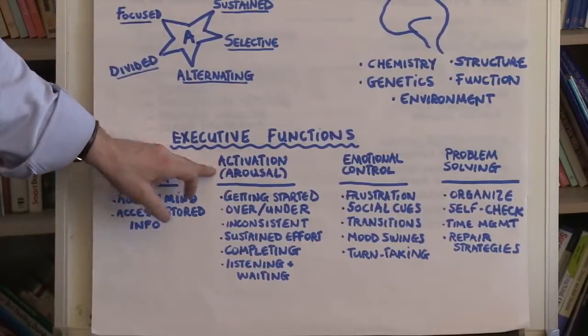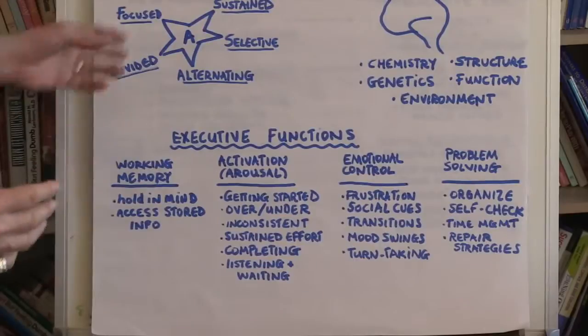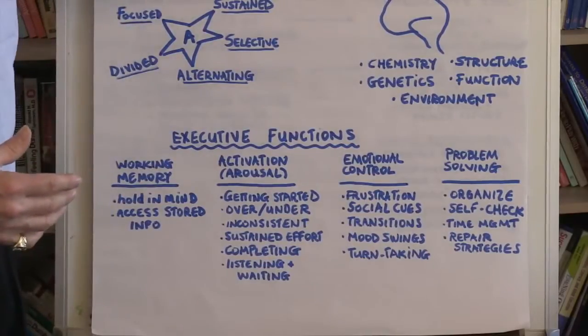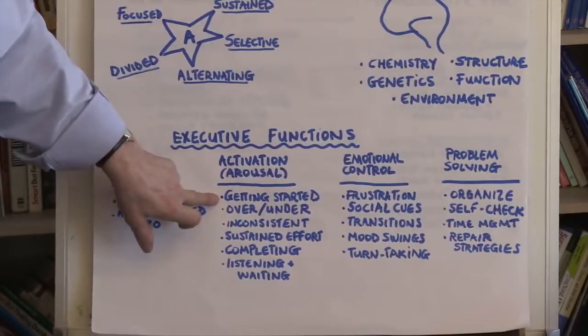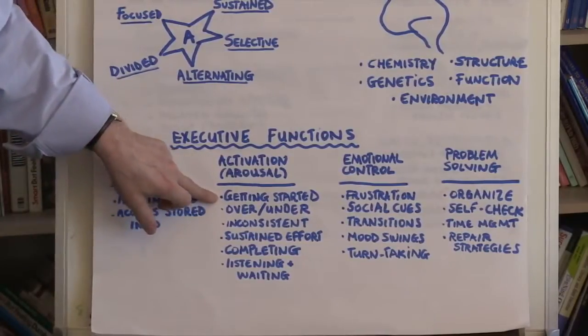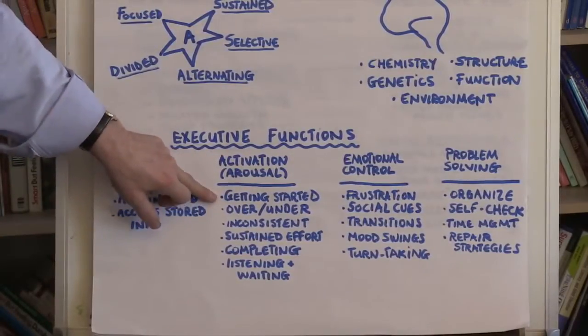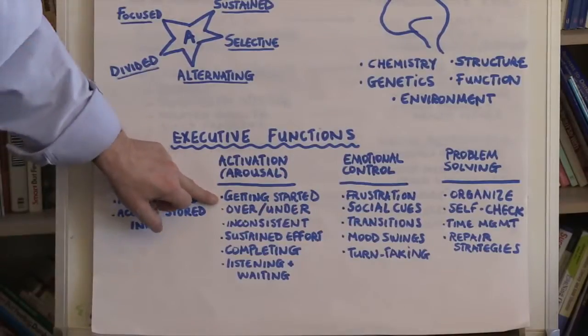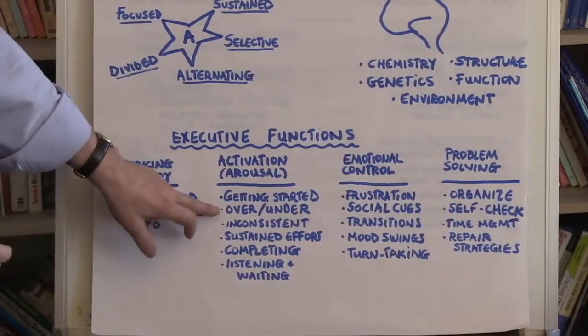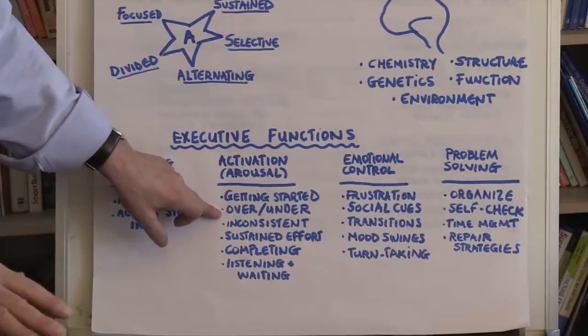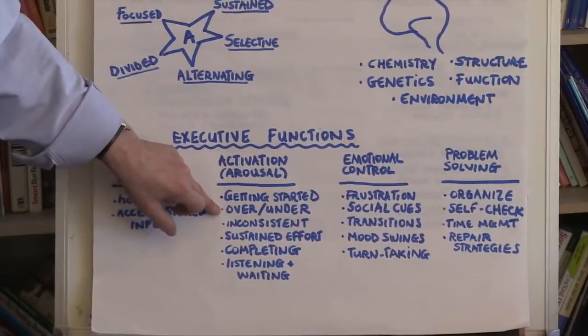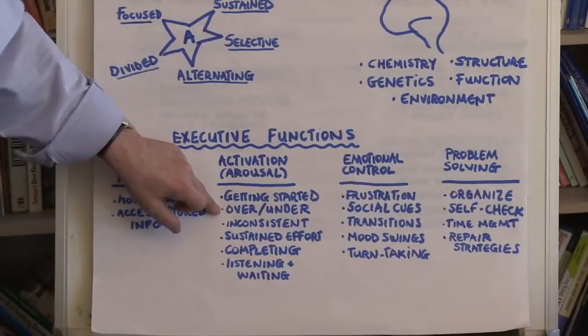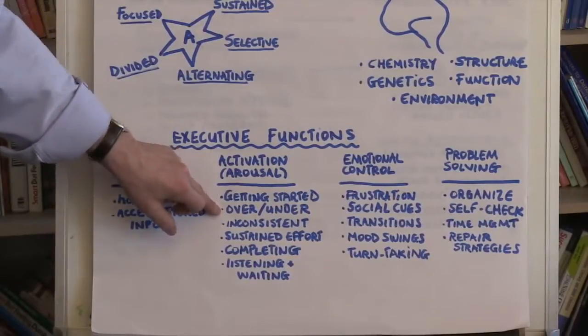Activation or arousal is another aspect very common, particularly in hyperactive, impulsive type individuals with ADHD. So getting started, they often are procrastinators or they don't know how to get started. They might start doing something but they may start in the wrong place or in the wrong way. They may be over aroused or under aroused. So for example, they may be ready to jump or they may be inattentive and need to be prompted to jump to start an activity.